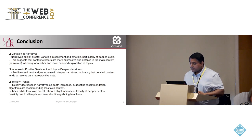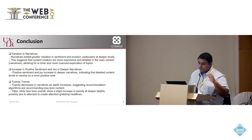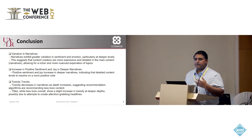The last observation we saw for the toxicity trends, which was toxicity decreases in narratives as depth increases, suggesting recommendation algorithms are recommending less toxic content, or they are attempting to minimize the spread of harmful content, which is one of the design elements of these algorithms. Titles, while less toxic overall, show a slight increase in toxicity at deeper depths. This again could be attributed to how content creators create their titles for maybe attention-grabbing headlines or monetization.